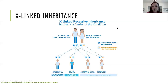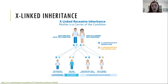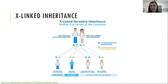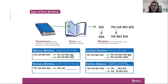Duchenne is a bit of an exception to the rule that mom does not have features of the condition, because our carrier females for Duchenne can show signs and symptoms. In every cell in her body, one X is turned on and one X is turned off because we don't need both. So there's about a 50% chance that the non-working copy would be active in a cell, and that distribution can be skewed. If more of those cells with the genetic variant are turned on, we're going to see more signs and symptoms. However, they typically do not present the same way as a male — they're usually much more mildly affected.